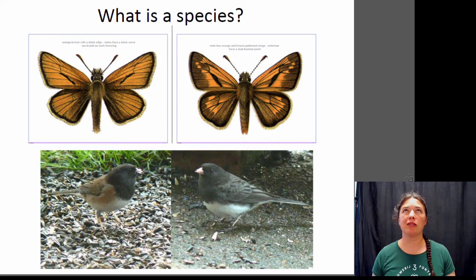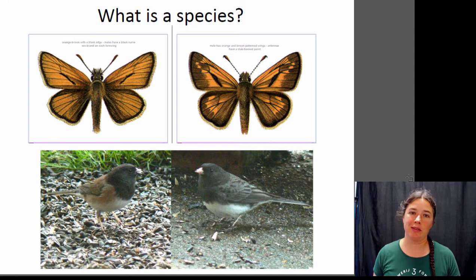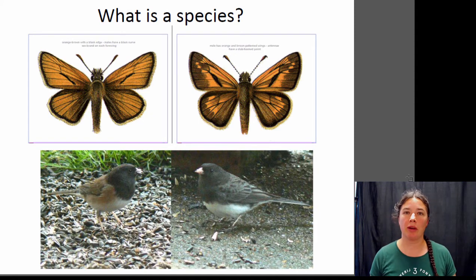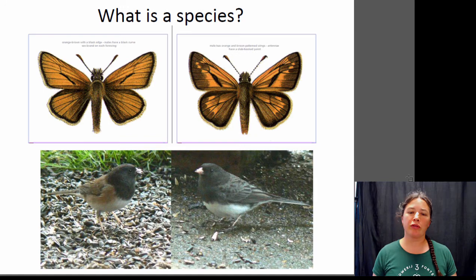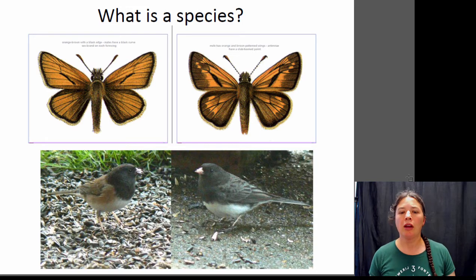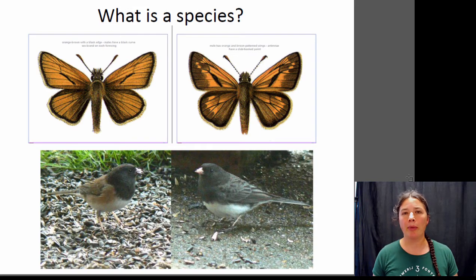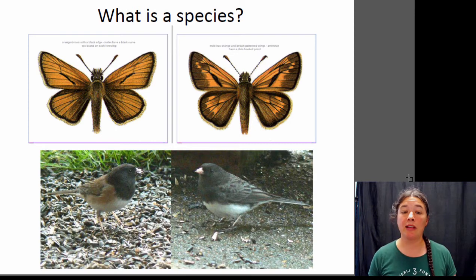A species concept is a way to describe what we consider a species. Let's take a look at these pictures — we've got two butterflies and two birds. Take a look at those and think about whether you'd consider them the same species or different species. It turns out the top ones, the butterflies, are two different species, and the lower ones, the birds, are two of the same species.